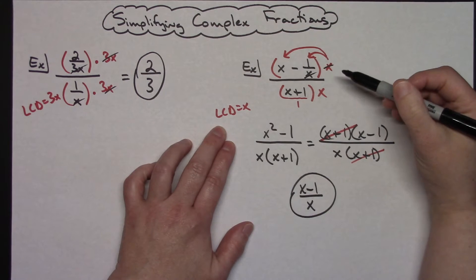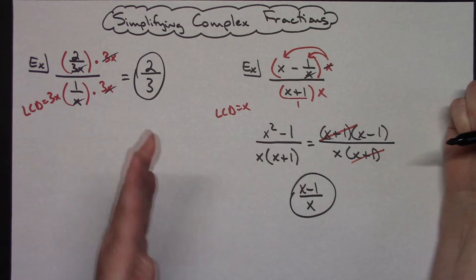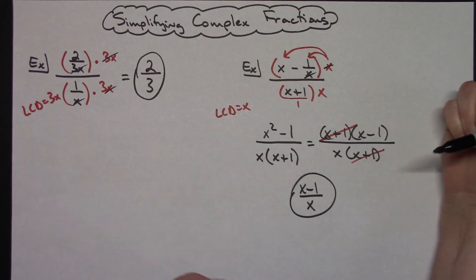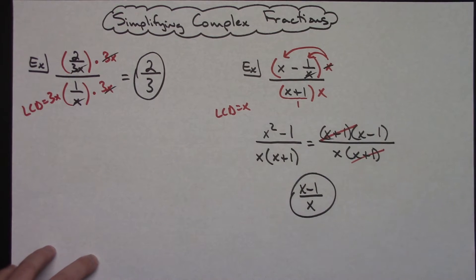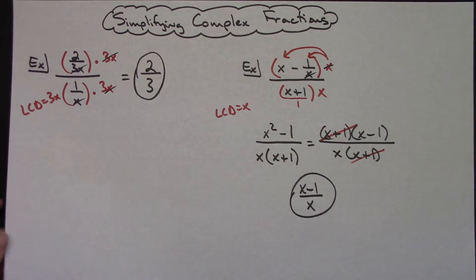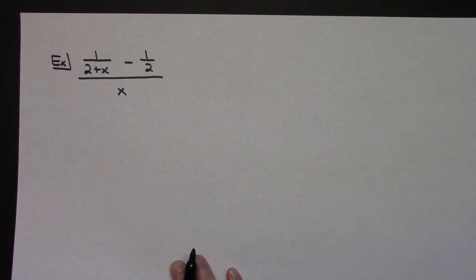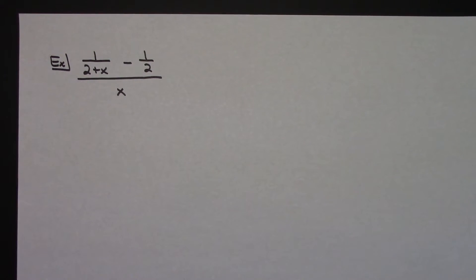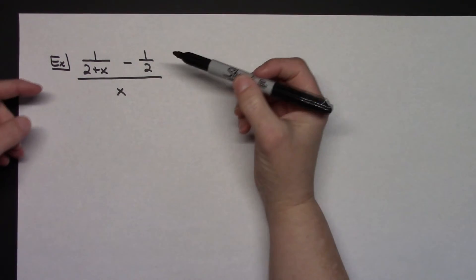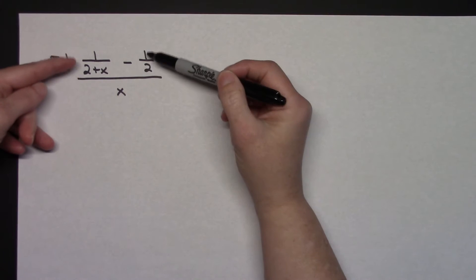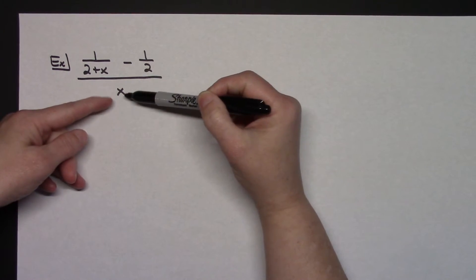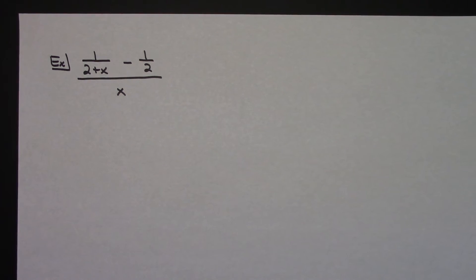Find your least common denominator, multiply through by it, and then if necessary, factor and simplify a little bit farther. Let's do one more example here. In this one we're going to have two fractions in the numerator, and then just a plain x in the bottom. Your first goal would be to go through and try to find the least common denominator.